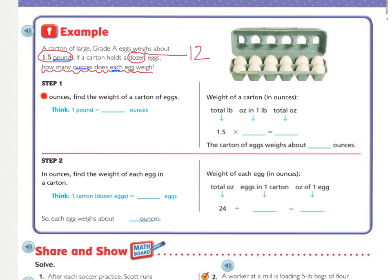So step one, in ounces, find the weight of a carton of eggs. So now we have to think how many ounces are in one pound. Well, remember the label for ounces is LB, and that looks like a number, it looks like 16, and there are 16 ounces in one pound. So now we need to multiply. What is the weight in pounds of the egg carton? It is 1 and a half, and so how many ounces are in a pound? There are 16. Multiply that out. You should have ended up with 24. So a carton of eggs weighs about 24 ounces.